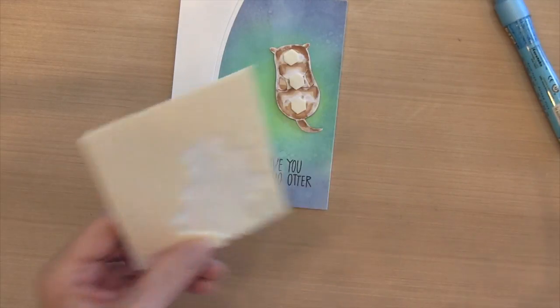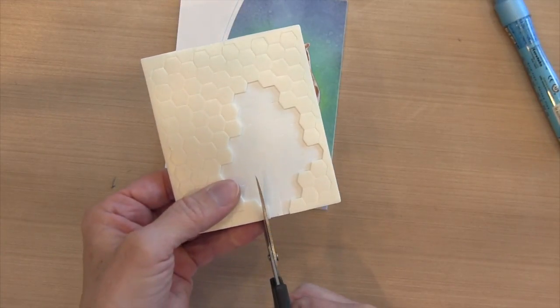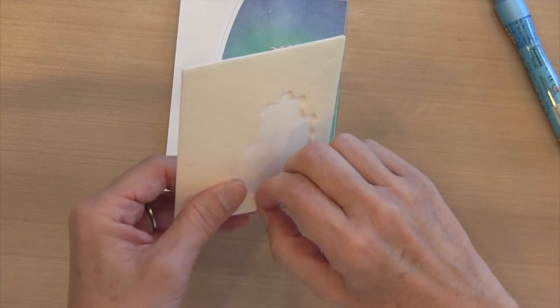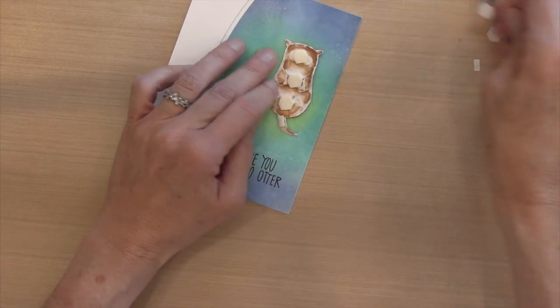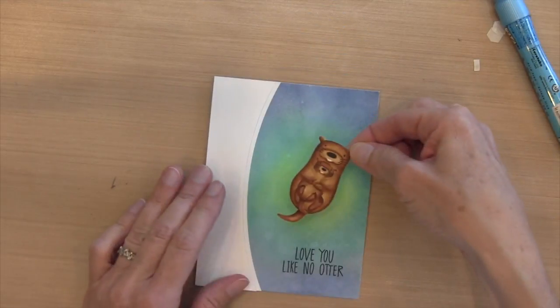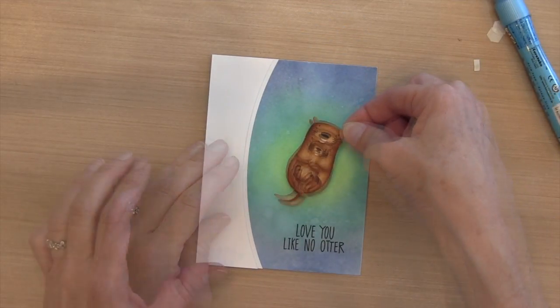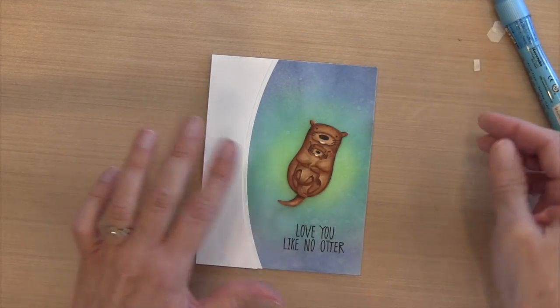Then I put some ATG tape runner on the back and put it onto a card base the same A2 size. Now I'm using my Stampin' Up Dimensionals—they're just some circular foam adhesive. I cut a piece for the tail. I put three pieces behind this otter plus that piece on the tail, then take the release backing off and put him right on top of the pistachio part so it looks like there's a glow behind it.